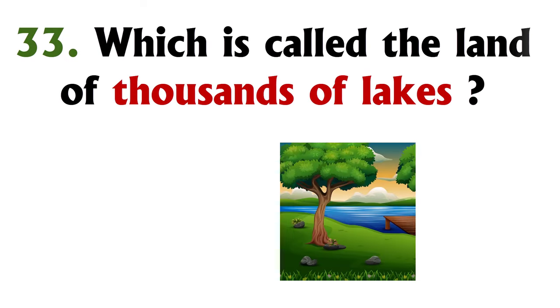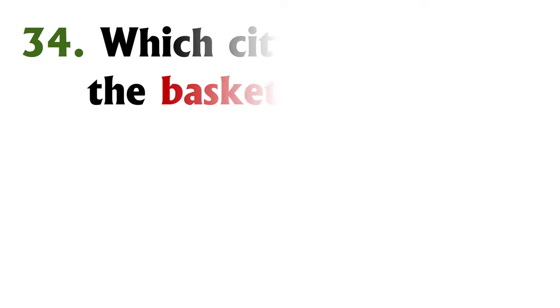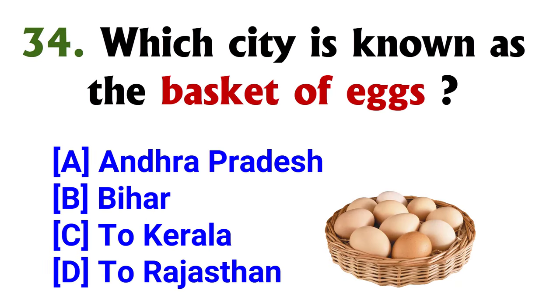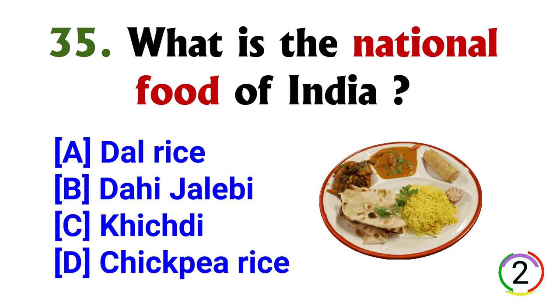Which is called the land of thousands of lakes? Option A, Finland. Which city is known as the basket of eggs? Option A, Andhra Pradesh. What is the national food of India? Option C, khichdi.